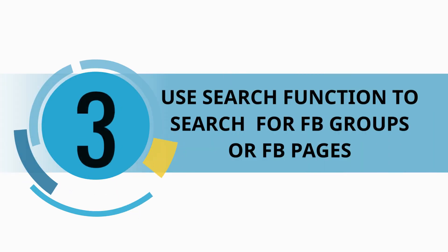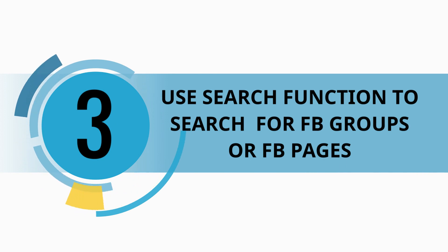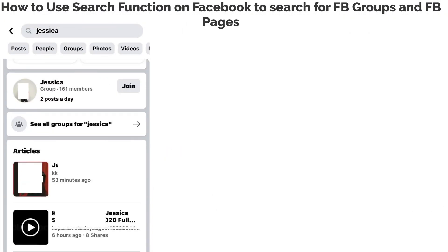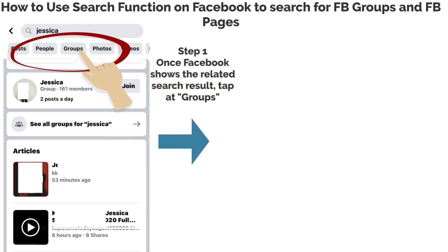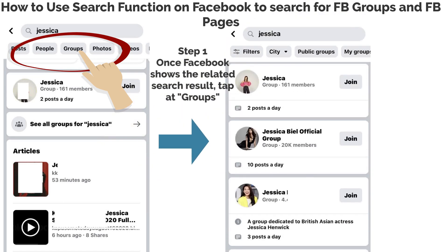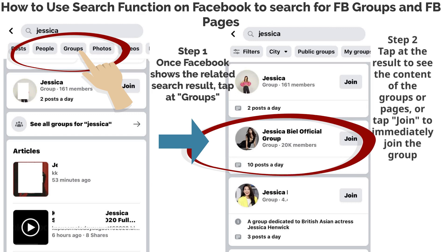Use the search function to search for Facebook groups or Facebook pages. Step 1: Once Facebook shows the related search results, select Groups. Step 2: Tap a result to see the content of the groups or pages, or tap Join to immediately join the group.